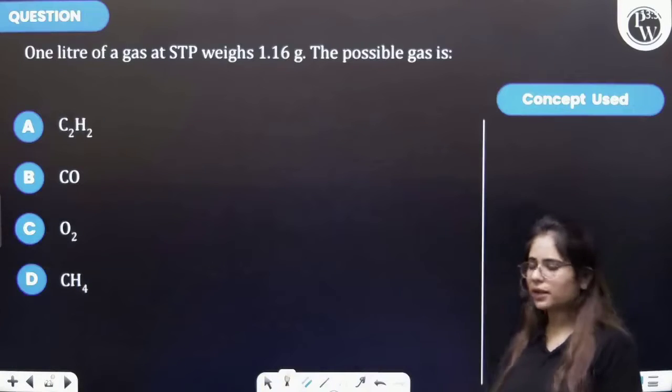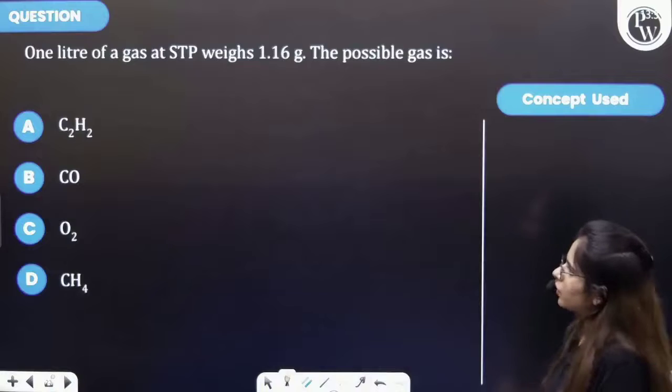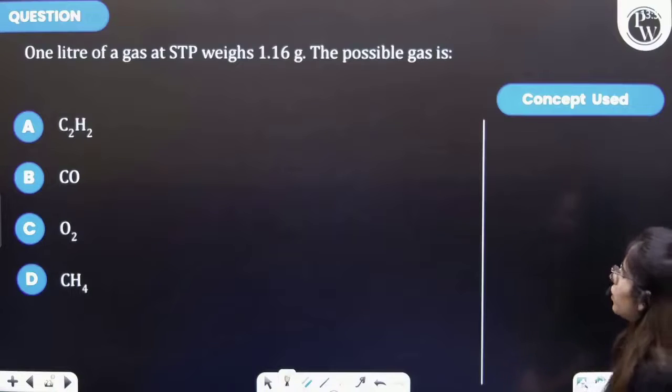Students, let's see this question. The question says that one liter of a gas at STP weighs 1.16 grams. The possible gas is?